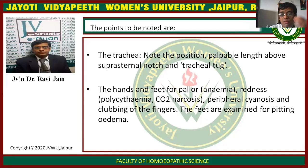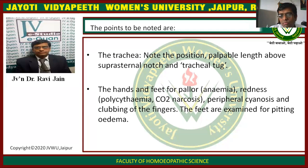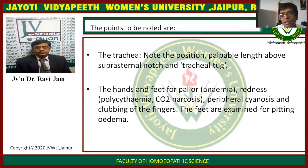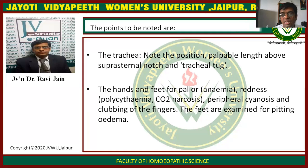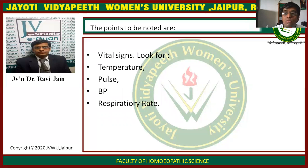Look at the hands and feet for pallor, which occurs most commonly in anemia, and redness that occurs in polycythemia or CO2 narcosis. Then look for peripheral cyanosis and clubbing of the fingers. Then examine the feet — the feet are examined for pitting edema. So you have to look at the patient from head to toe: looking at the eyes, the mouth, the tongue, the teeth, the neck with tracheal position, jugular venous pressure, and cervical lymphadenopathy. Then check the trachea and examine the hands and feet. Then look for vital signs.